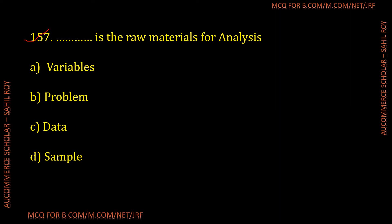Question number 157: What is the raw material for analysis? The options are: Option 1 variables, Option 2 problem, Option 3 data, and Option 4 sample. The correct answer is Option C — data is the raw material for analysis.